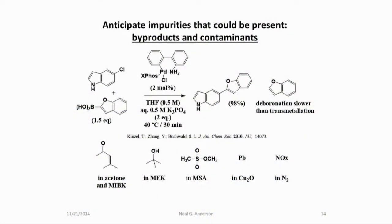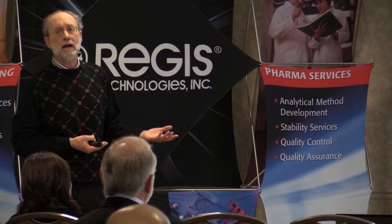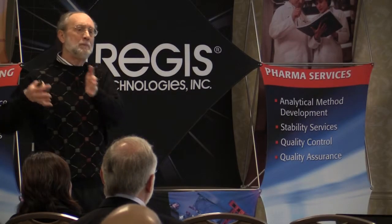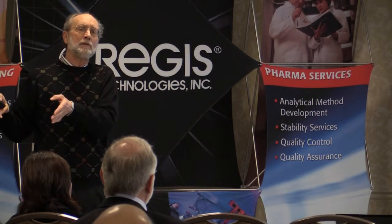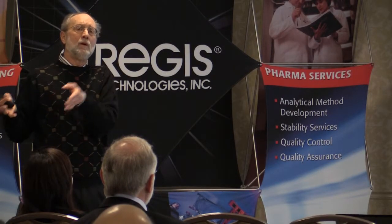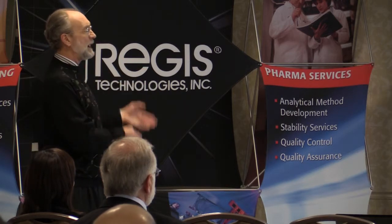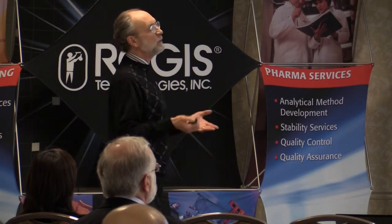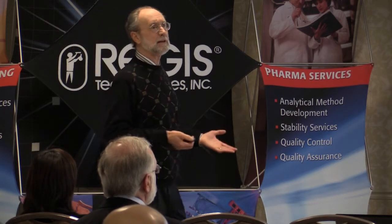As organic chemists, one of the things that's really incumbent upon us is to anticipate the impurities that are going to be present in our process streams. These can either be from side products, contaminants, or byproducts. How do we deal with things like this?